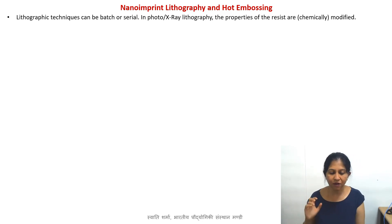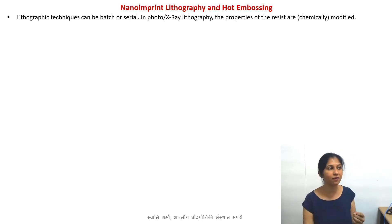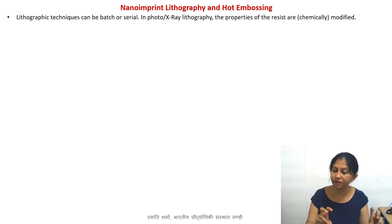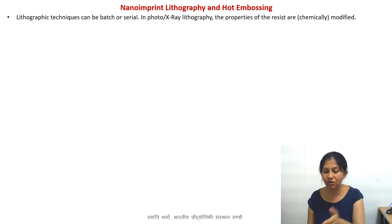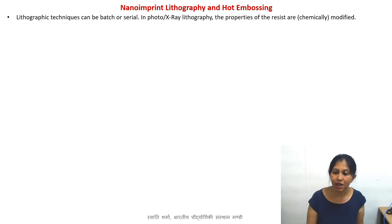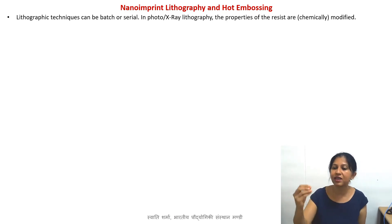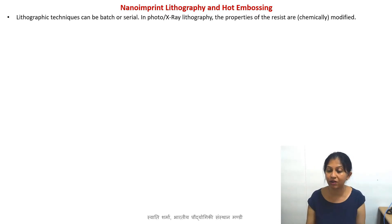In all our lithographic techniques, we modify the properties of the resist in some way. In photolithography we use UV light, in X-ray lithography we use X-rays — chemically changing the resist to make it hard, soft, or selectively soluble. What we can also do is control a property physically: melting of a material. Polymers have a glass transition temperature; below it the polymer behaves like glass, and above it the material becomes softer and enters a rubbery state.